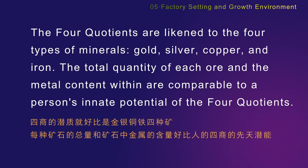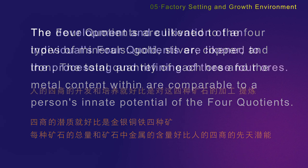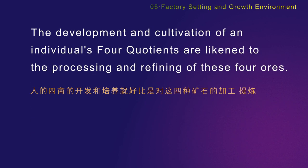The four quotients are likened to the four types of minerals: gold, silver, copper, and iron. The total quantity of each ore and the metal content within are comparable to a person's innate potential of the four quotients. The development and cultivation of an individual's four quotients are likened to the processing and refining of these four ores.